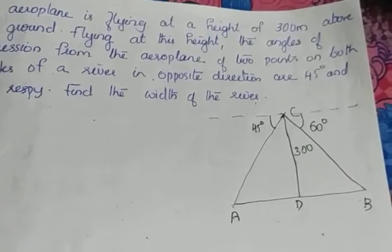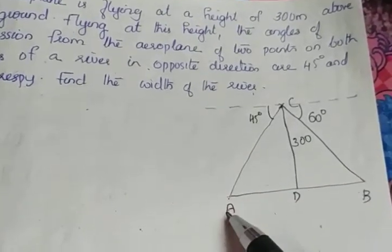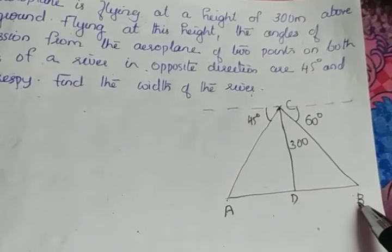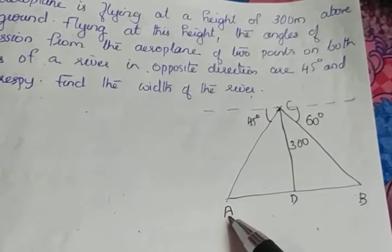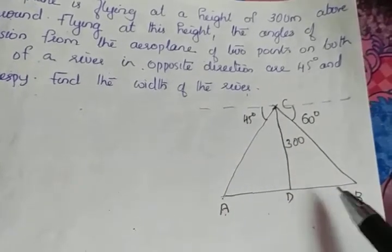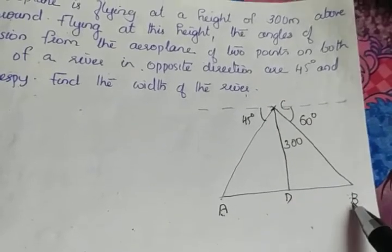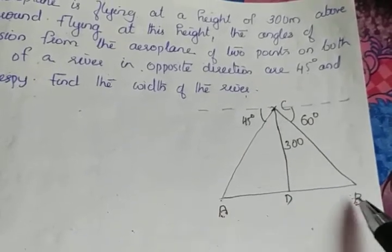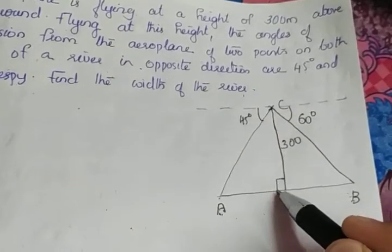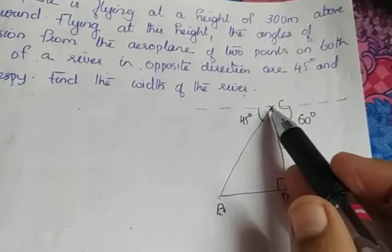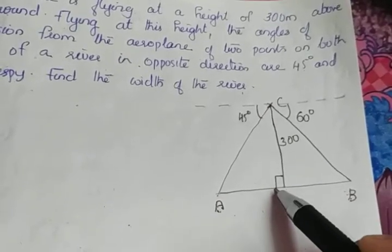The question is to find the width of the river. We took A and B as the 2 points on both banks of the river, so we have to find the distance between A and B. To find this, we know that CD is a perpendicular height of 300 meters, so angle CDA is 90 degrees.